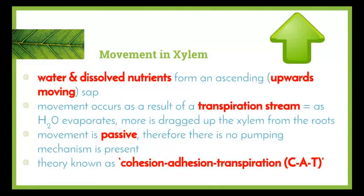In the xylem, water and dissolved nutrients form an ascending sap, meaning water is drawn from the bottom and moves upwards towards the top of the plant. Movement occurs as a result of a transpiration stream — as water evaporates out of the leaves through transpiration, more water is drawn into the xylem from the roots. Movement is passive, requiring no energy and no pumping mechanism, unlike in animals where the heart pumps substances around the body. The theory we need to know is called the cohesion-adhesion transpiration, or CAT theory.